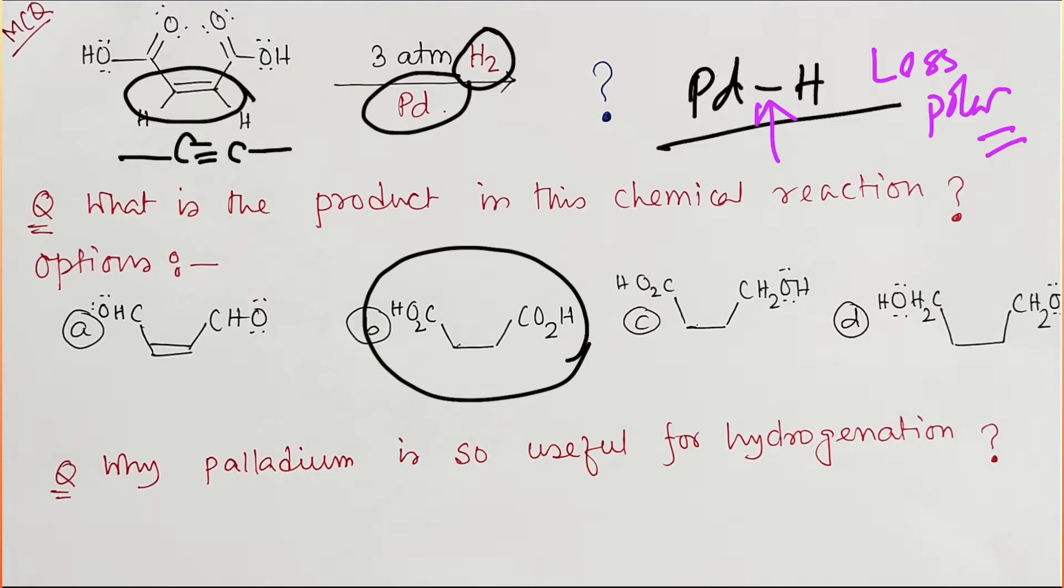Okay, now question: what happens about this COOH? COOH is a very polar group. Consequently, this palladium hydrogen generally cannot reduce this COOH efficiently. For that purpose, you can choose another reagent like lithium aluminium hydride.